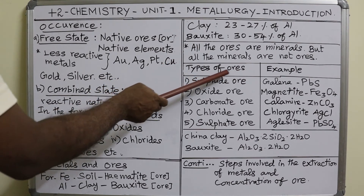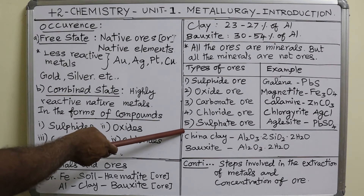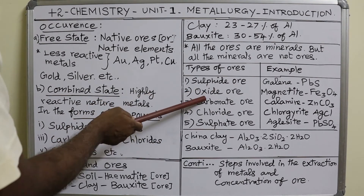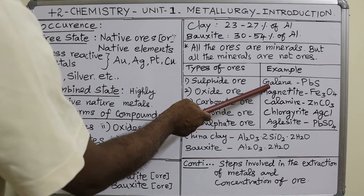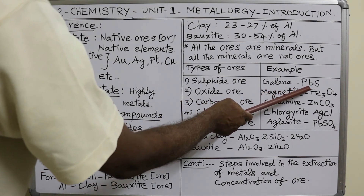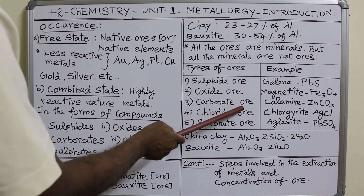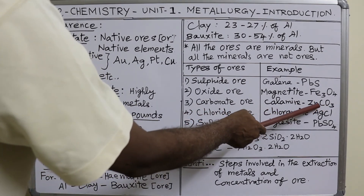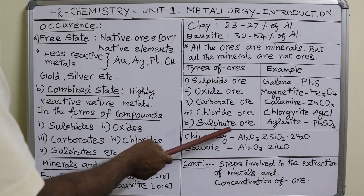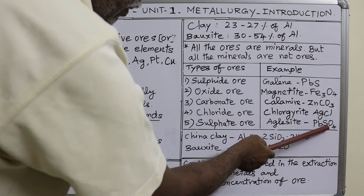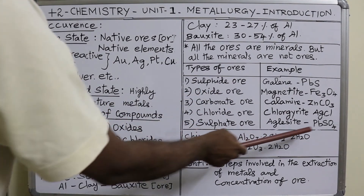When we go to the types of ores, various metals and ores are listed in your textbook. We can classify those ores into five types: sulfide ores, oxide ores, carbonate ores, chloride ores, and sulfate ores. For sulfide ores, the example is galena (PbS), the ore of lead. For oxide ores, magnetite (Fe₃O₄) is the ore of iron. For carbonate ores, calamine (ZnCO₃) is the ore of zinc. For chloride ores, chlorargyrite (AgCl) is the ore of silver. For sulfate ores, anglesite (PbSO₄) is the ore of lead.